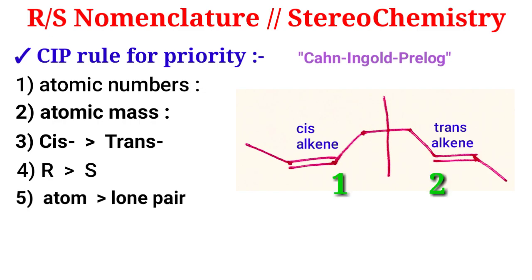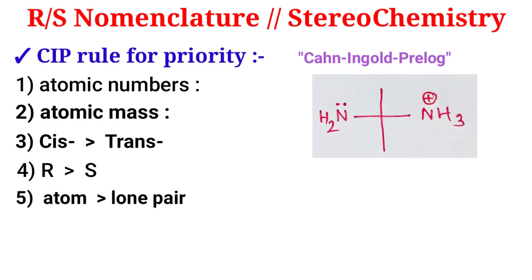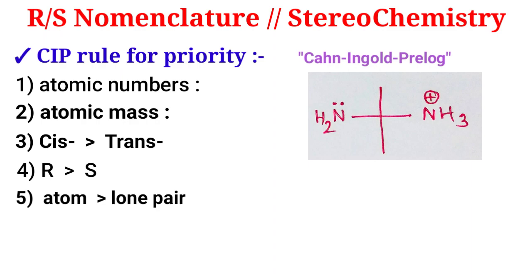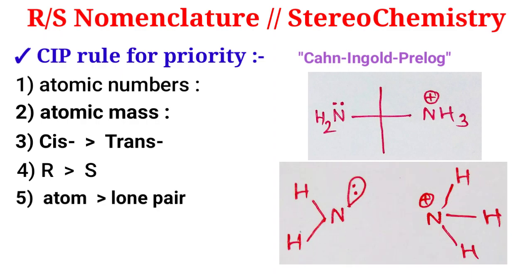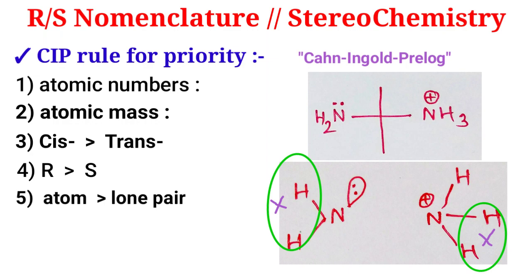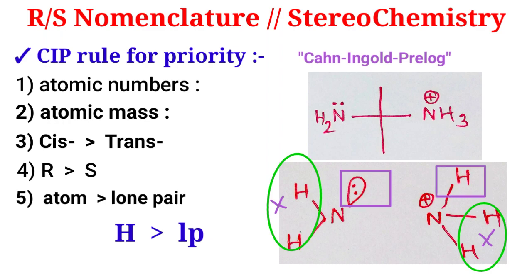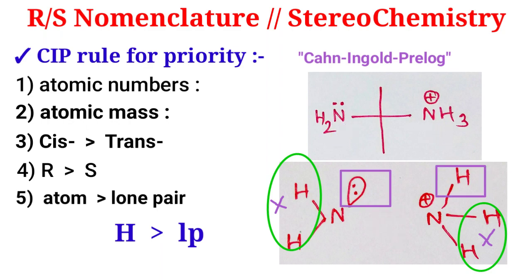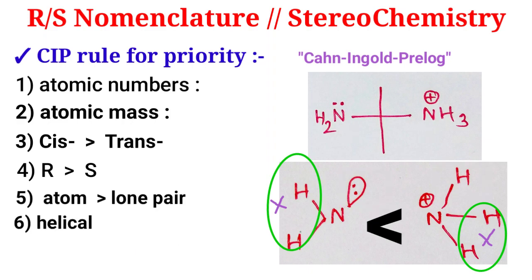Rule number five: an atom gets higher priority than a lone pair. For example, here one side is an NH2 group and the other is NH3+, where the lone pair is protonated. This nitrogen has two hydrogens and this nitrogen has three hydrogens. The two hydrogens cancel each other out, leaving one remaining hydrogen versus one remaining lone pair. Since atoms get higher priority than lone pairs, NH3+ gets higher priority.